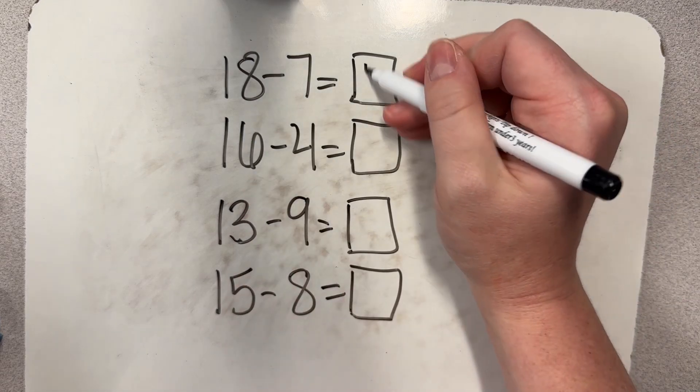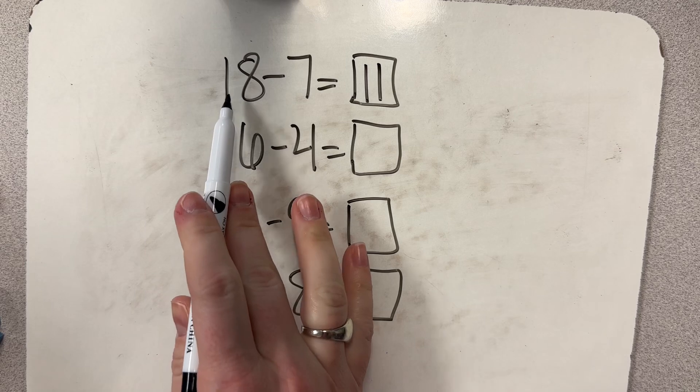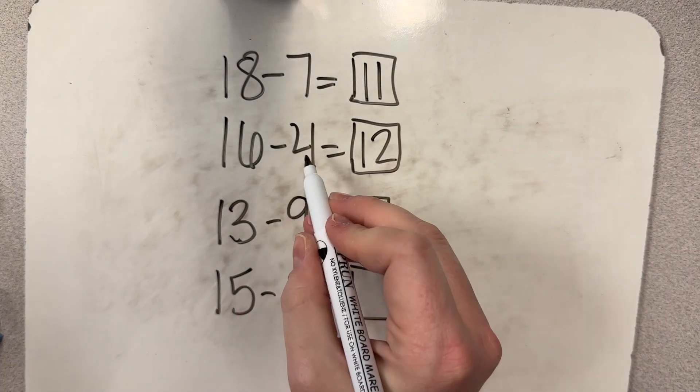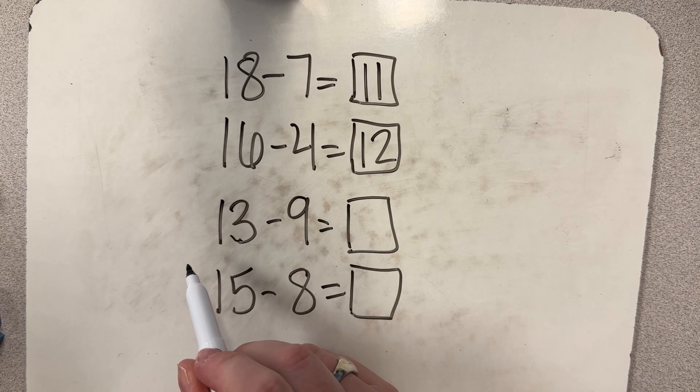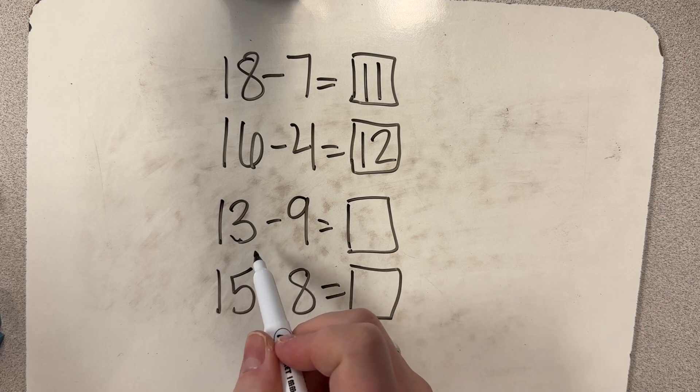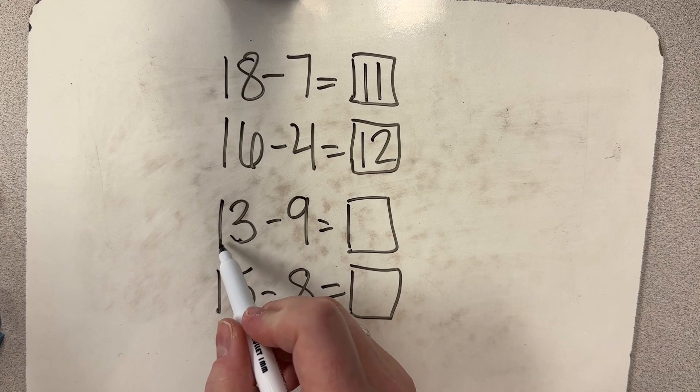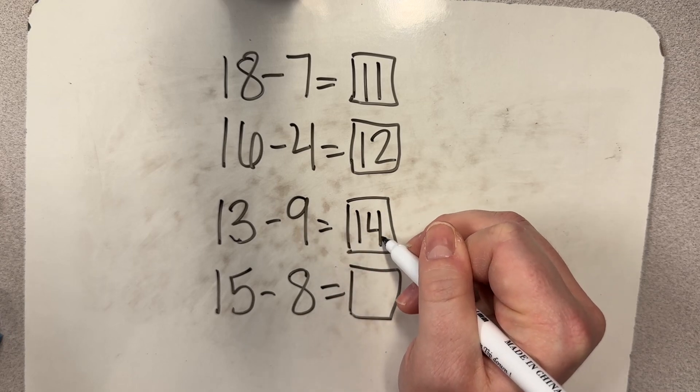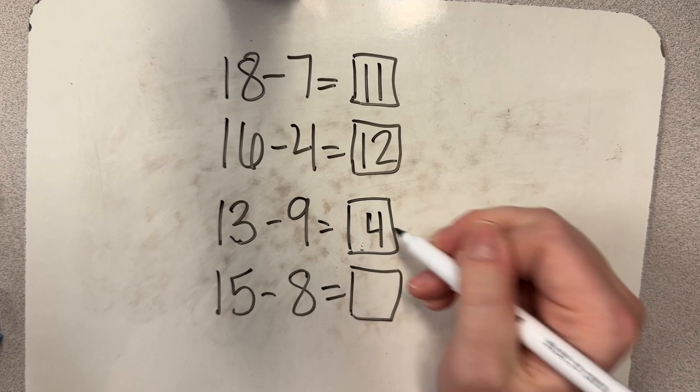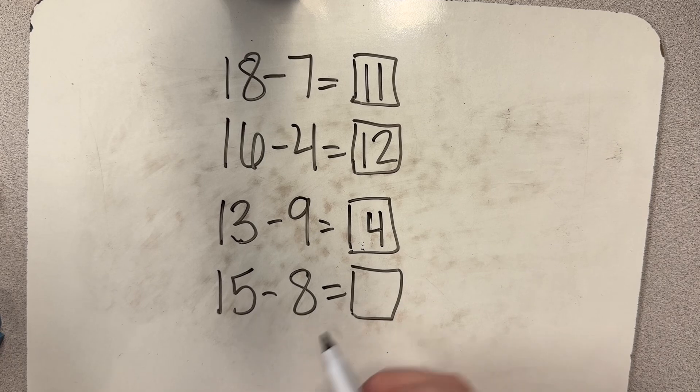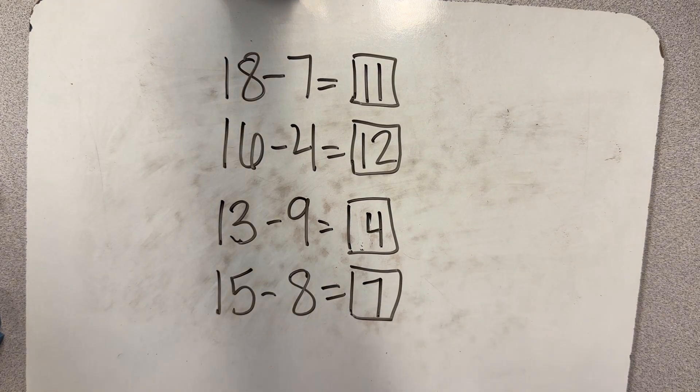18 minus seven is 11 because eight minus seven is one and one in 10 more is 11. 16 minus four is 12 because six minus four is two. Two and 10 more is 12. 13 minus nine. This one again, I have to decompose. So this is four because I would do 10 minus nine is one. One and three more is four. And then 15 minus eight is seven. Because I have 10 minus eight is two. Two and five more is seven.